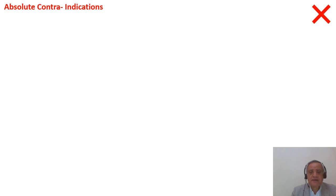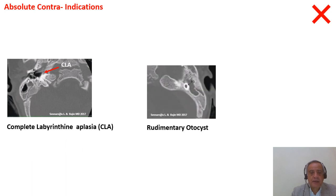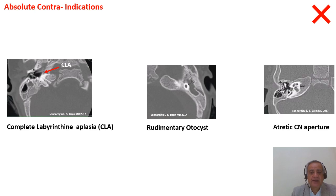I will classify our indications and contraindications into four main categories. The first category is absolute contraindications for CI, where you cannot even think of CI. These are: first, complete labyrinthine aplasia; second, the rudimentary otocyst; and third, the atletic cochlear nerve aperture, also called the trapped cochlea.